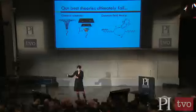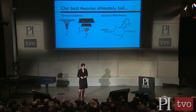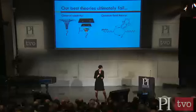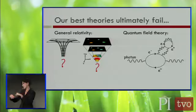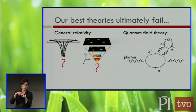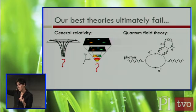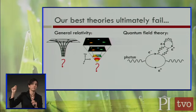Now, quantum field theory — the advanced version of quantum theory, which describes everything else, describes matter — has also been tested to great accuracy. But it works in a funny way. It tells you things like, as you have in this diagram there, you can start with a photon, and the photon can split into a pair of electron and positron, which then can maybe recombine into a photon. But one of these electrons could split into another photon, which could split into another electron and positron pair, which could split into another photon, and could keep going ad infinitum. So that is kind of a problem, because you get another infinity.